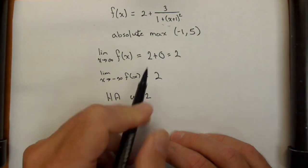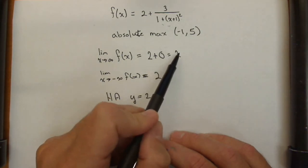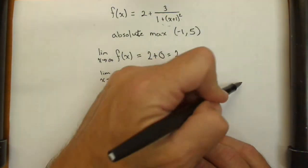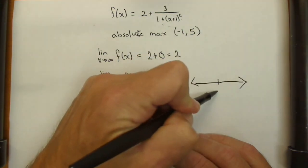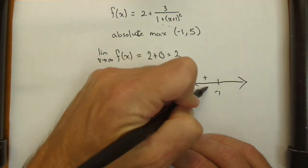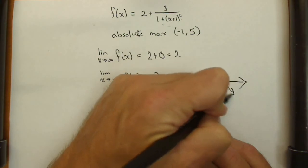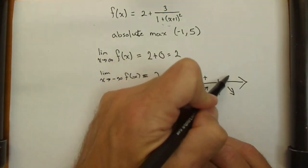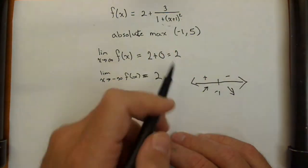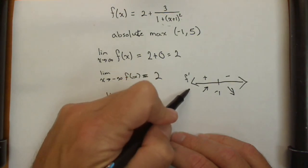And we can see that because it increases all the time—if you remember from our line chart from last time, it was always increasing from negative infinity to -1, and always decreasing from -1 to infinity.